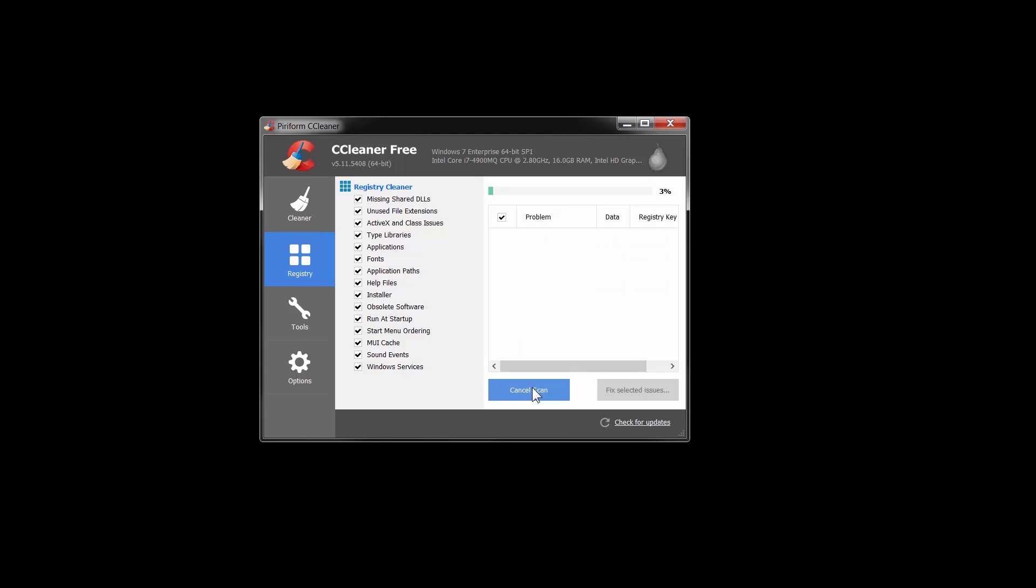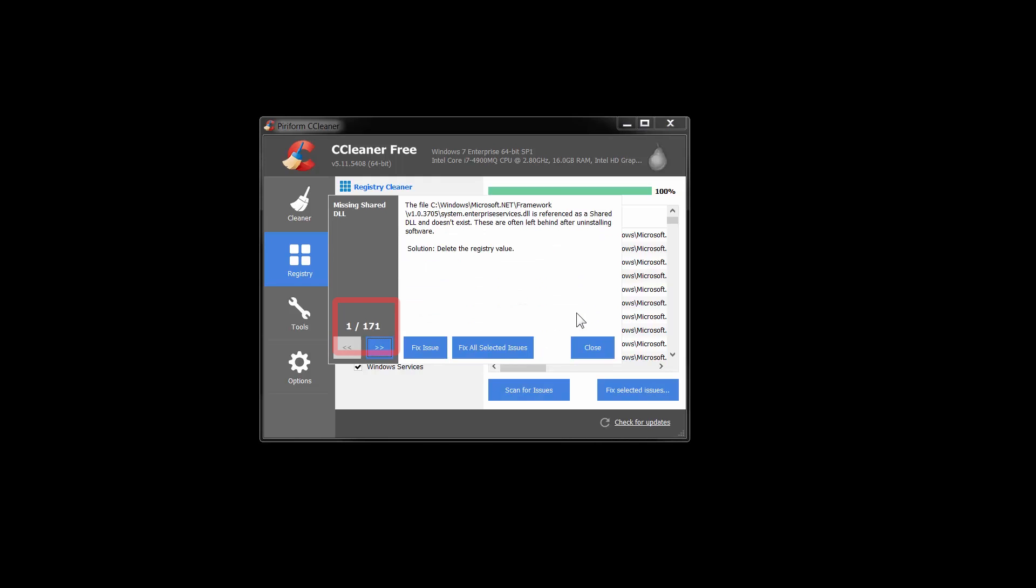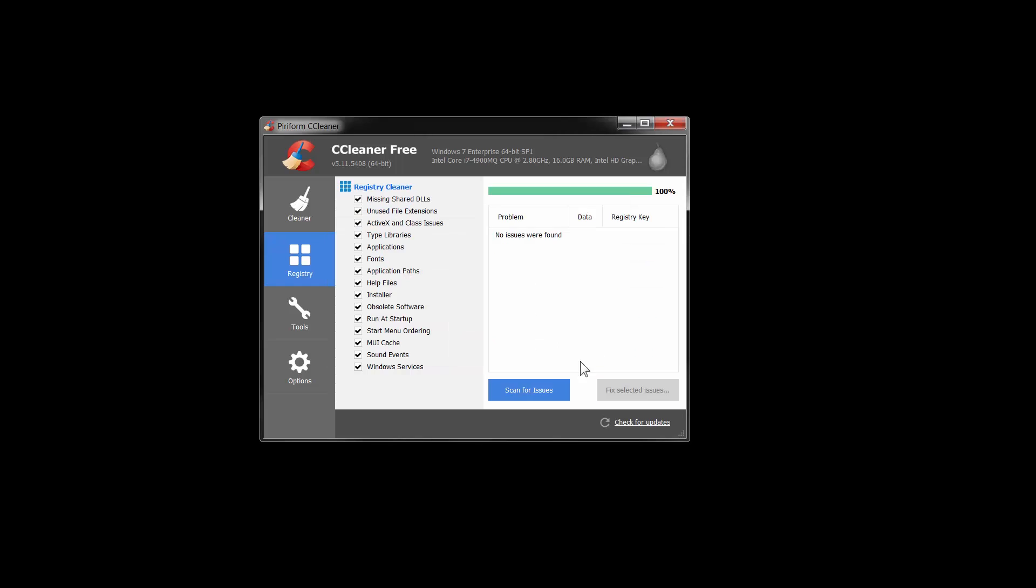Now what you might not know about this is you can actually hit that button again and it will run the same algorithms on your registry and it will actually find more. So you might end up having to click this registry button a couple of times before you have cleaned out your entire registry. So that's a pretty neat trick.